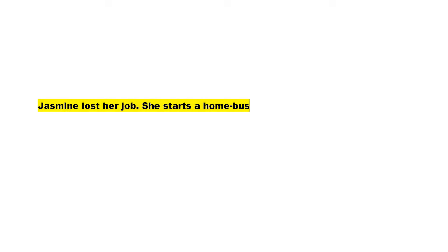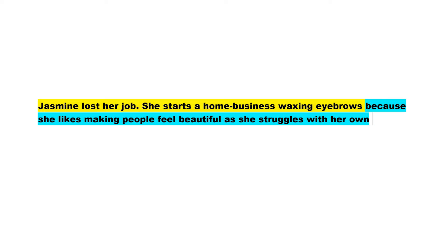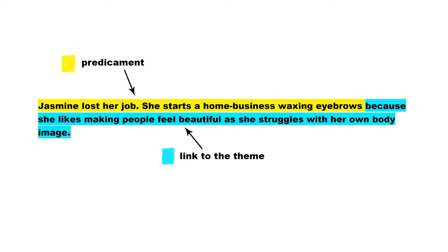So what's Jasmine's predicament? Well, Jasmine lost her job. Because she lost her job, she starts an at-home eyebrow waxing business. She does this because she likes making people feel beautiful, as she herself struggles with her body image. In the story, the predicament is highlighted in yellow, and the link to the theme is in blue.